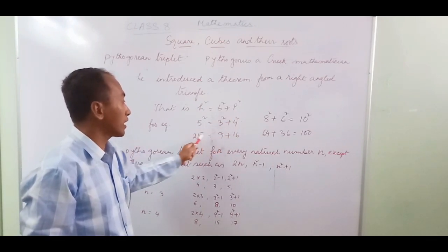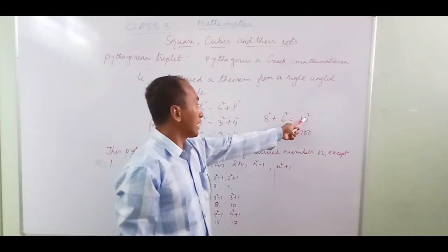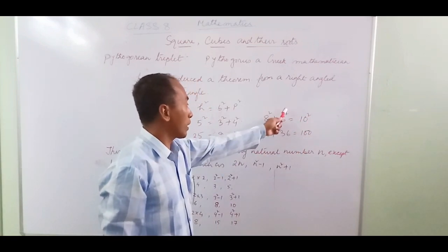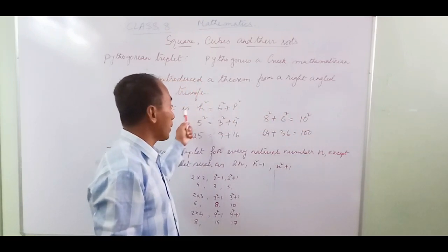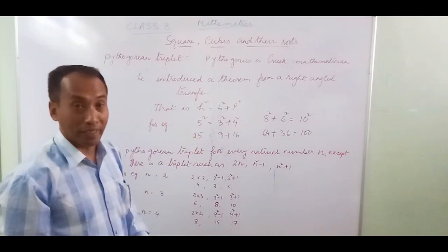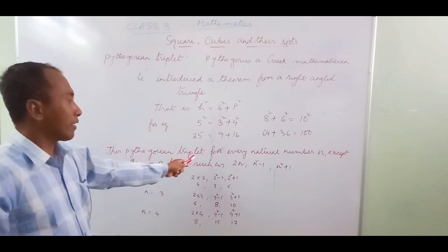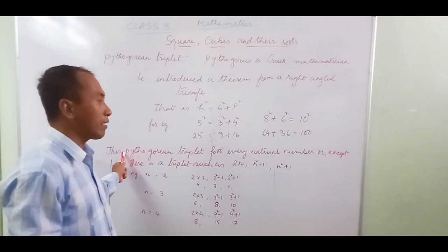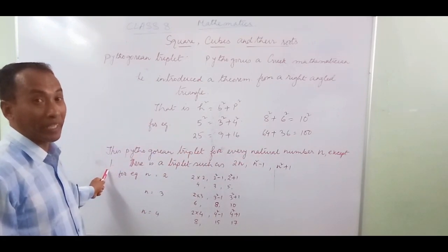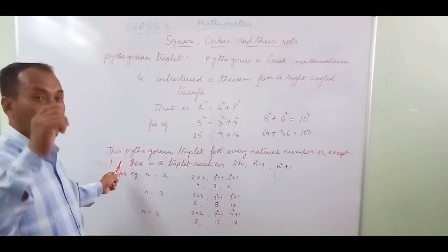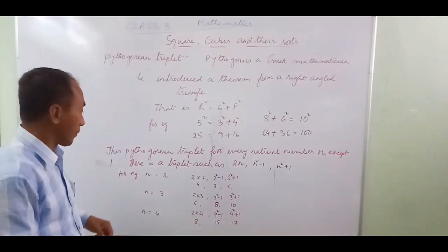Another example: 8 squared plus 6 squared equals 10 squared, since 64 plus 36 equals 100. These sets of numbers are called Pythagorean triplets. For every natural number there is a Pythagorean triplet, except for 1. For natural numbers 2, 3, 4, 5, 6 and beyond, a Pythagorean triplet always exists.